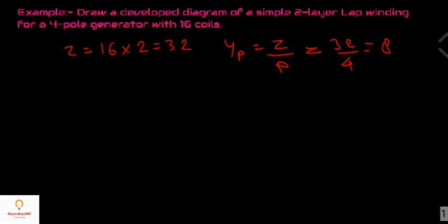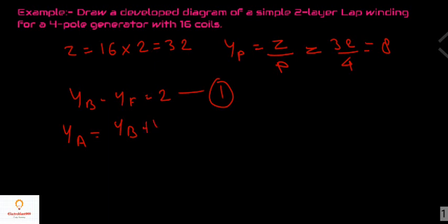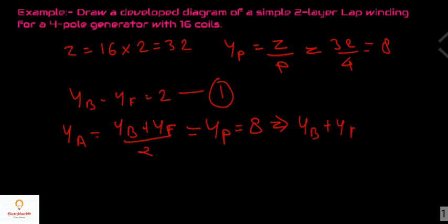From the first point, it is clear that back pitch and front pitch must differ by 2, so Yb minus Yf equals 2. Let this be the first equation. We also know that average pitch equals back pitch plus front pitch divided by 2, which equals the pole pitch, which is 8. This implies back pitch plus front pitch equals 16. Let this be the second equation.